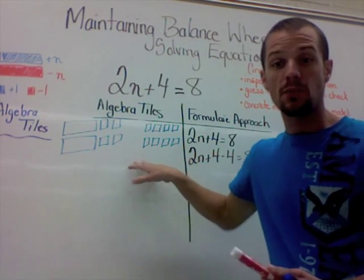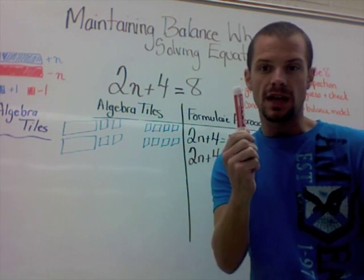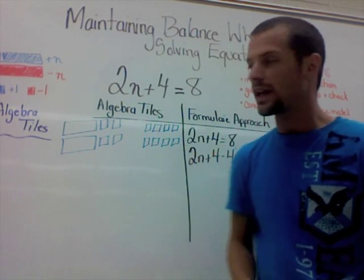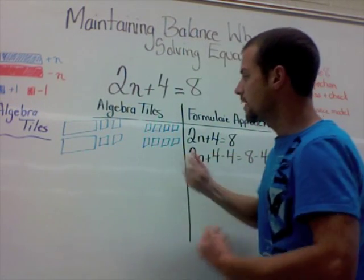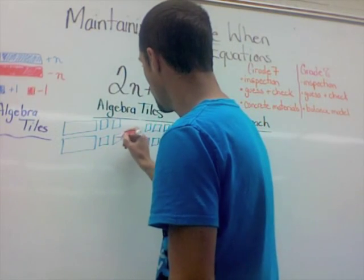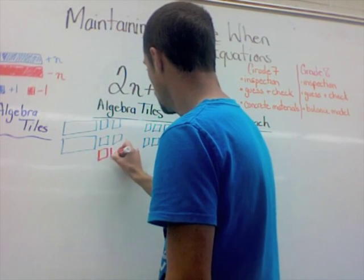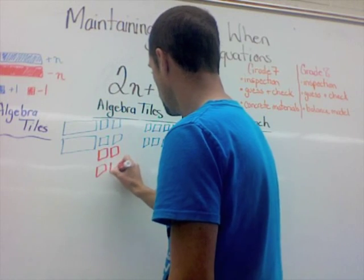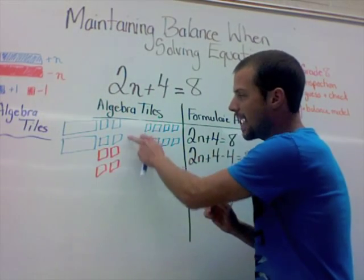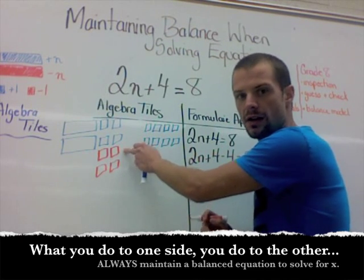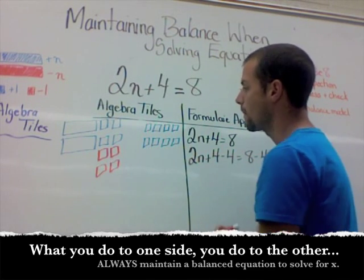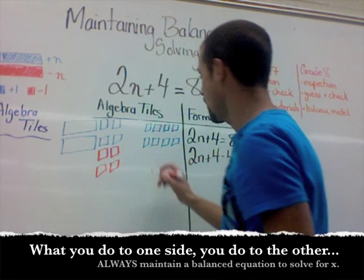Well, you do the same thing over here by bringing in negatives to create zero pairs. So we'll get out the red marker now. Because we have 4 ones on this side, we want to bring in 4 negatives. To match, this now says 0. For each blue and red pair, it's a zero pair.